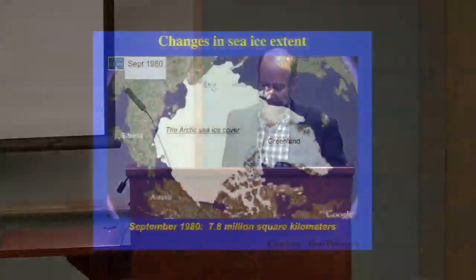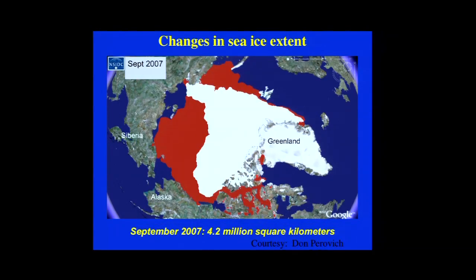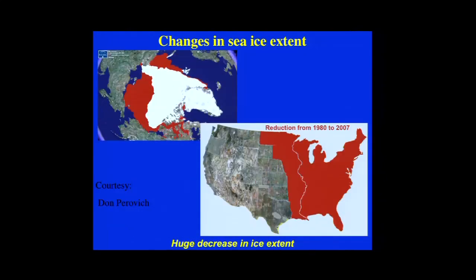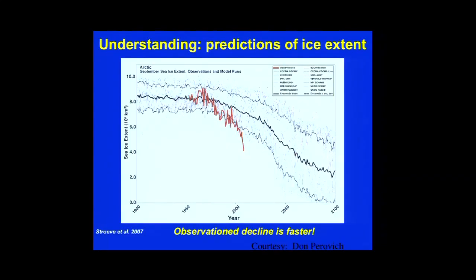Have we really seen a change globally? This image shows Arctic sea ice coverage at the end of summer in 1980 versus 2007 — about half the United States worth of ice has melted. Looking at worst case scenarios of Arctic ice melt from 1900 to 2100, the red line showing observed melting rate is actually worse than the worst case scenario. This is when the climate community said we're really seeing a response to global warming.